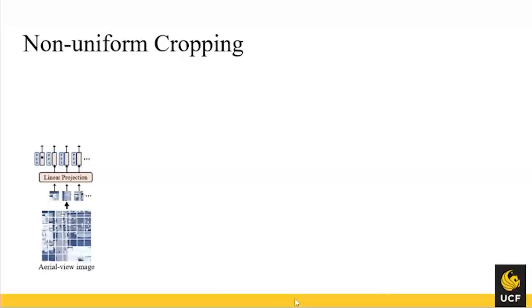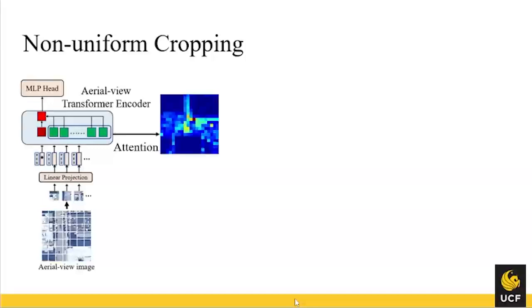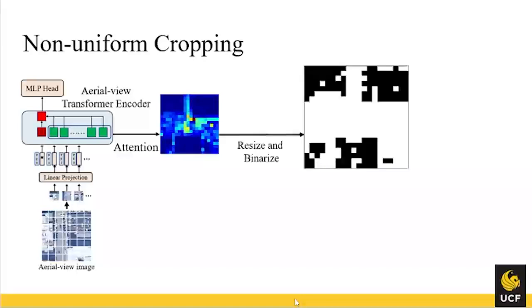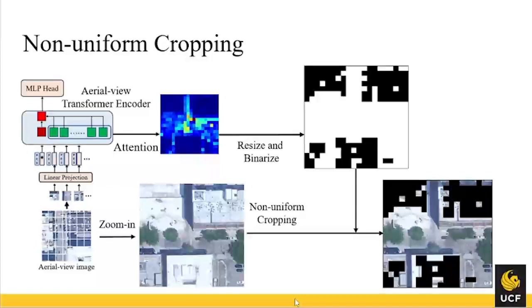Here are the details of the non-uniform cropping. After patch embedding and positional embedding, we put the input into the transformer encoder and get the output. The class token (red) is the only one connected to the output MLP head; the green ones are image tokens. We use the correspondence between the class token and all image tokens as the attention map, resize it and binarize it to get a mask, then zoom in to get the high-resolution image and combine them to get the final input.